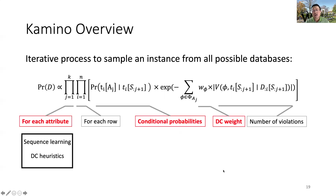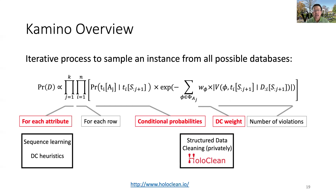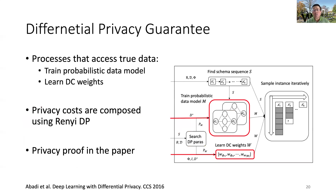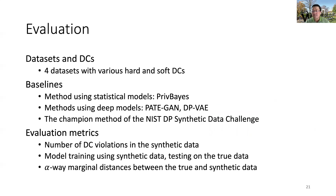In order to sample by decomposition, Camino first learns a good attribute sequence by leveraging the input DCs, because intuitively some attributes can be more informative than others. Also, we need to know the conditional probability for each cell and the DC weight for soft constraints. Our solution is built on top of the HoloClean framework for weight learning, and we repurpose the HoloClean repair model to output private PDFs for each cell as a discriminative model. In Camino, only the model training and weight learning access the true data, and we add noise to the learning processes for differential privacy. We can prove end-to-end differential privacy guarantee for the entire synthesis process.